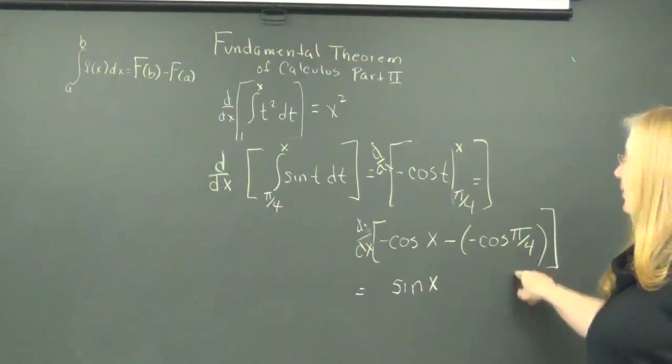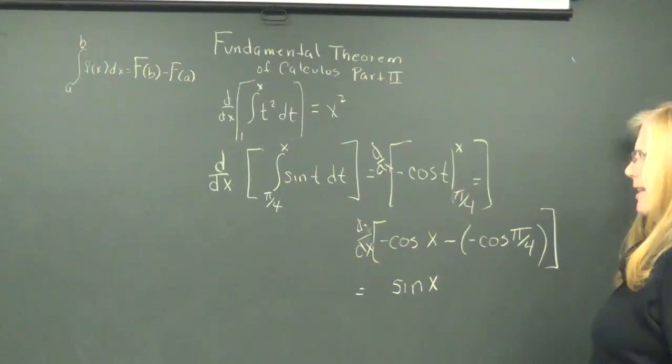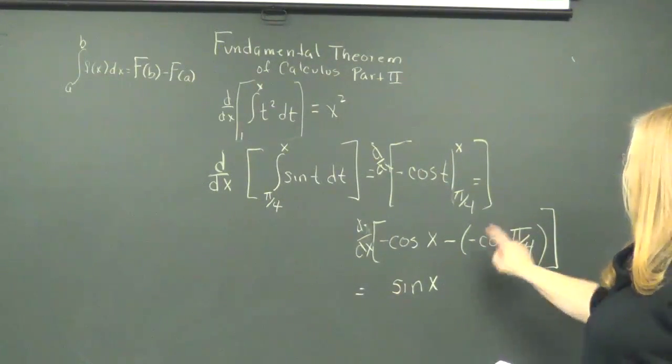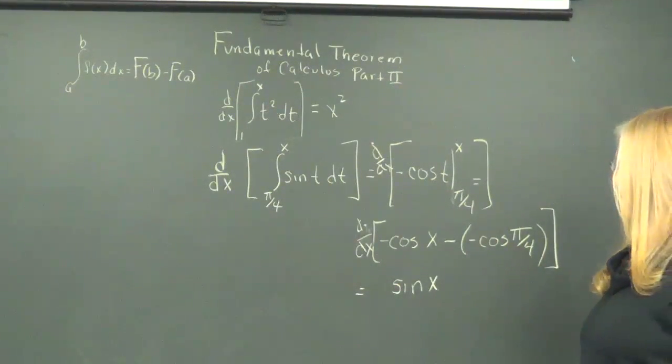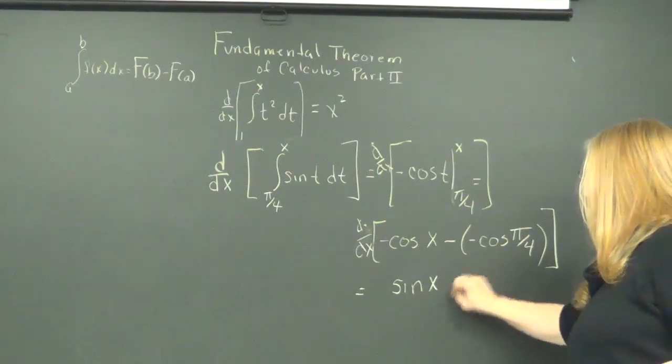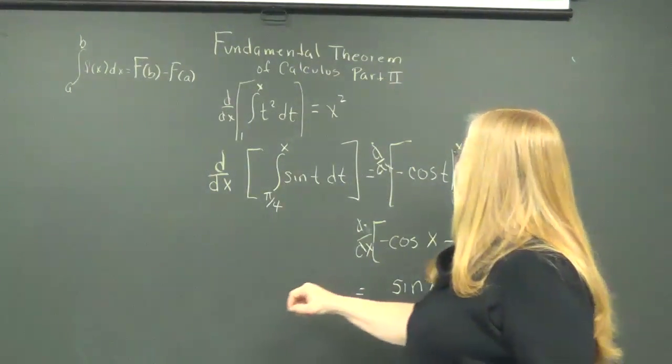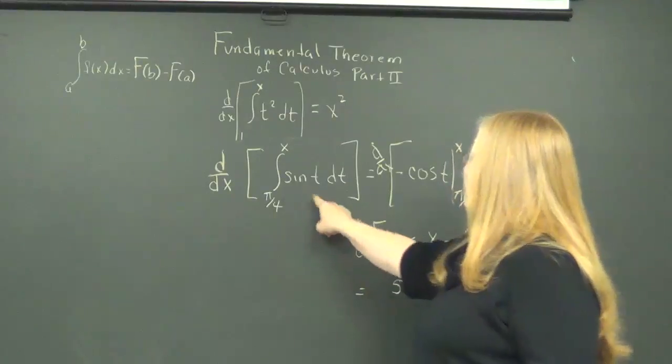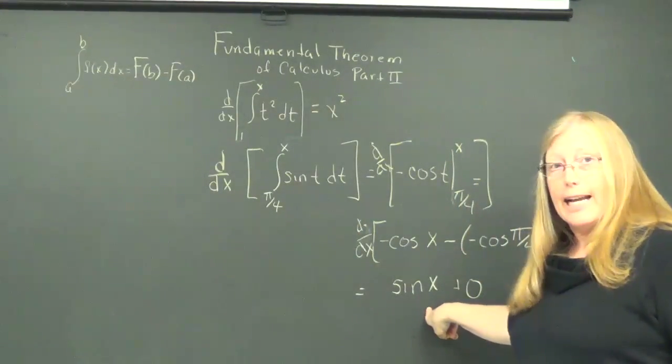So, the derivative of a constant, what is cosine of pi over 4? Square root of 2 over 2, double negative, positive square root of 2 over 2. So, what's the derivative of that? Zero. So, notice we took the derivative of this expression and got that expression.